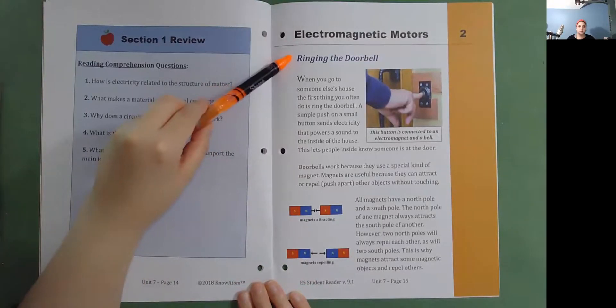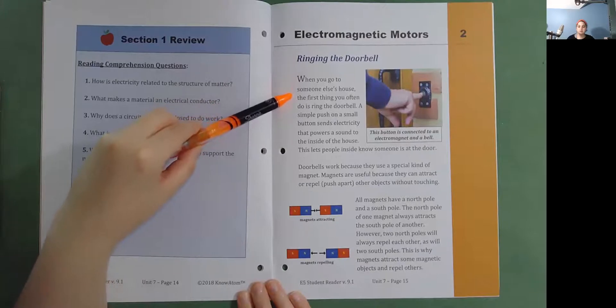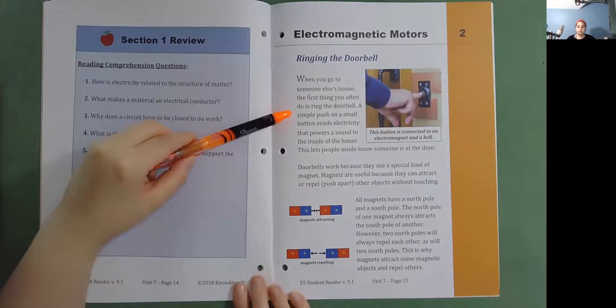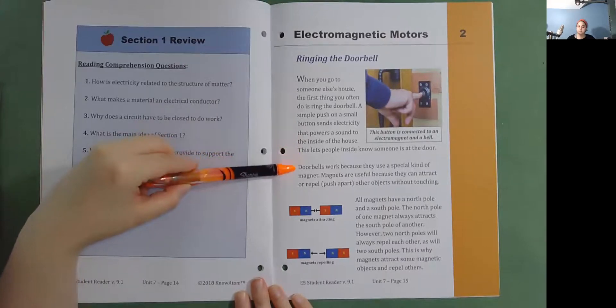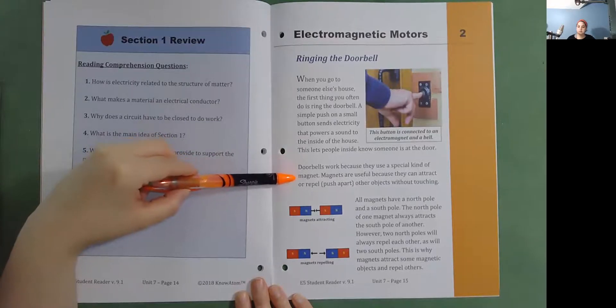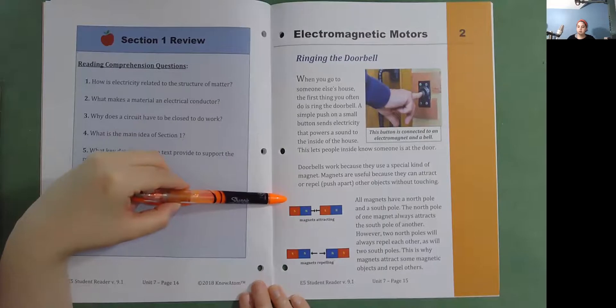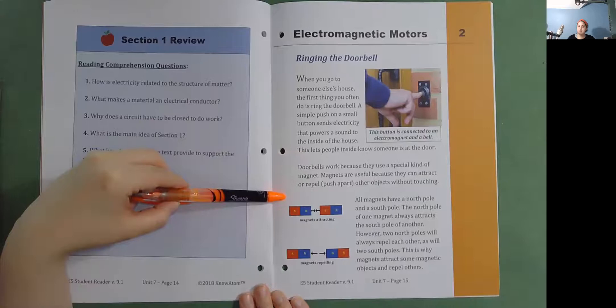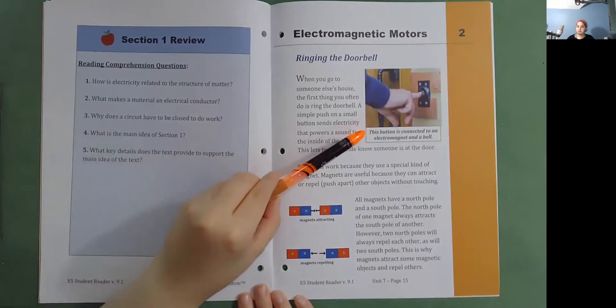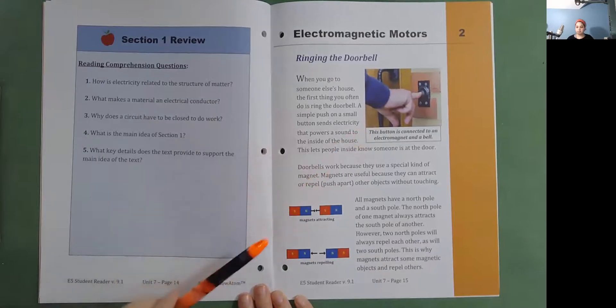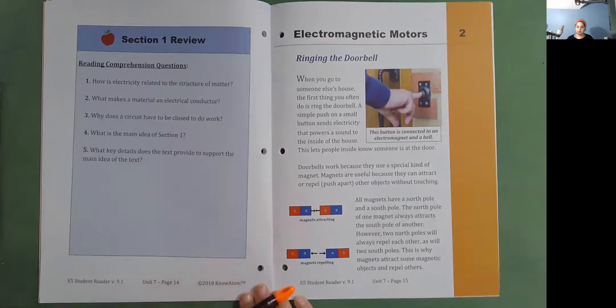Electromagnetic motors. Ringing the doorbell. When you go to someone else's house, the first thing you often do is ring the doorbell. A simple push on a small button sends electricity that powers the sound to the inside of the house. This lets people inside know someone is at the door. Doorbells work because they use a special kind of magnet. Magnets are useful because they can attract or repel, push apart, other objects without touching. All magnets have a north pole and a south pole. The north pole of one magnet always attracts the south pole of another. However, two north poles will always repel each other, as will two south poles. This is why magnets attract some magnetic objects and repel others. This button is connected to an electromagnet and a bell. So here you're seeing magnets attracting and here magnets repelling.